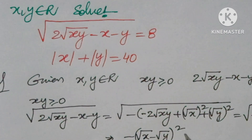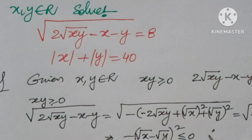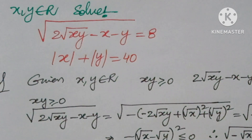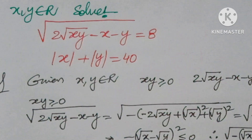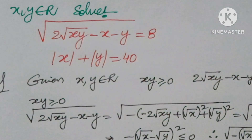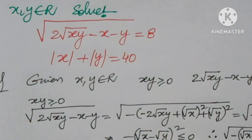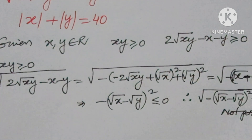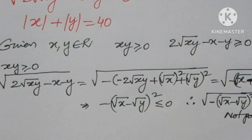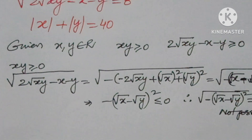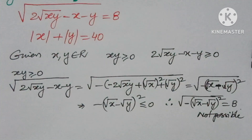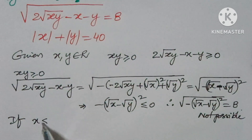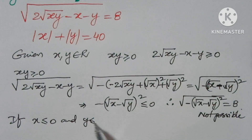This expression (√x − √y)² is less than or equal to zero. But it equals 8, which is not possible. So, the case xy ≥ 0 leads to a contradiction, meaning x and y must both be less than or equal to zero.